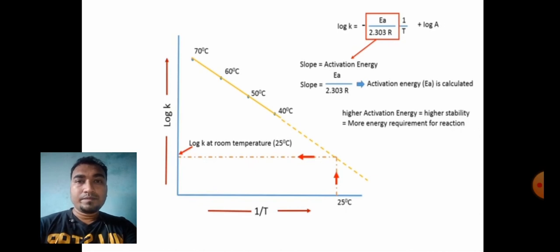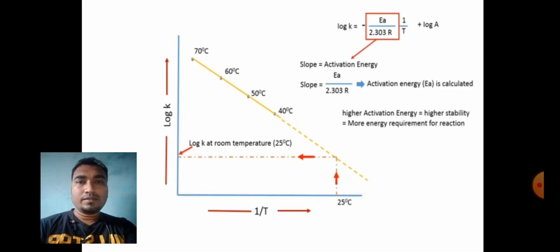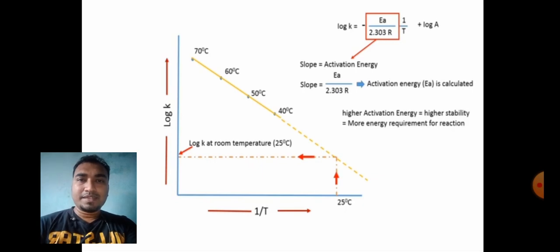After obtaining the k value at 25 degrees Celsius from the extrapolated graph, you can put this k value into the shelf life formula. For example, if the reaction is a first-order reaction, the T90 formula is T90 = 0.105 / K1. By substituting the k value obtained from the graph, you can easily calculate T90, which is the shelf life or expiry date of any dosage form. I hope you understood this lecture — thank you very much.